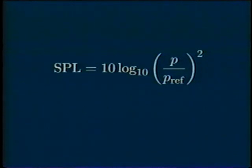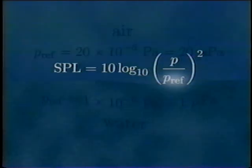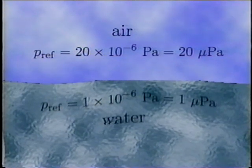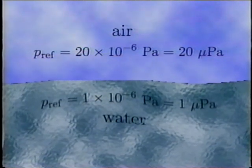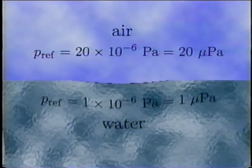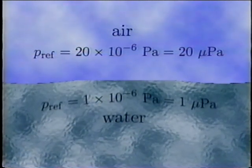In this equation, P is a time averaged pressure, and P_ref is the reference pressure, a quantity that depends on the medium in which the sound wave is propagating. In water, P_ref equals 1 times 10 to the negative 6 pascals, which equals 1 micropascal. In air, P_ref equals 20 micropascals. This is the pressure value which represents the threshold of unimpaired human hearing for a 1 kilohertz tone — the quietest audible sound at that frequency.